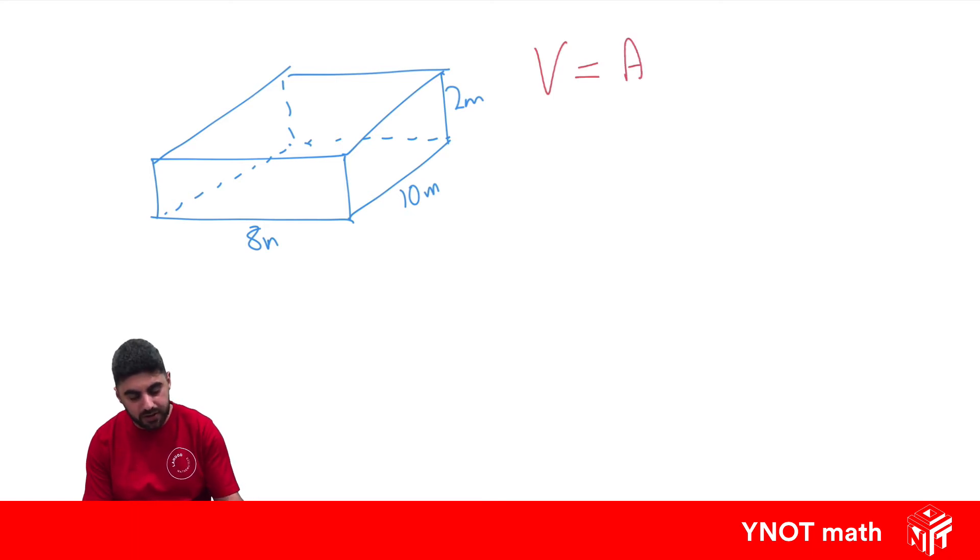So the area of one of those faces is going to be 8 by 2, times the distance between those areas that are the same, which is 10. So the area of the front is 8 by 2 multiplied by the distance between them, which is 10.